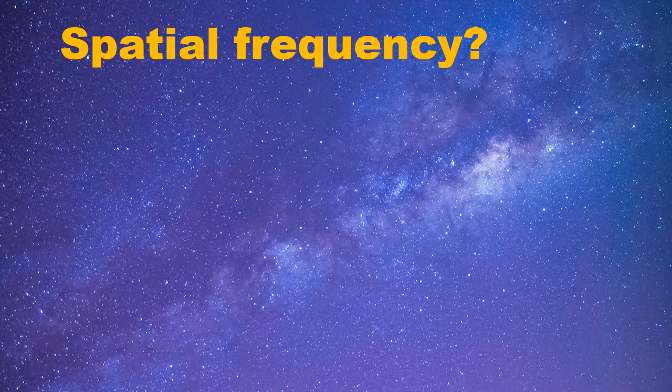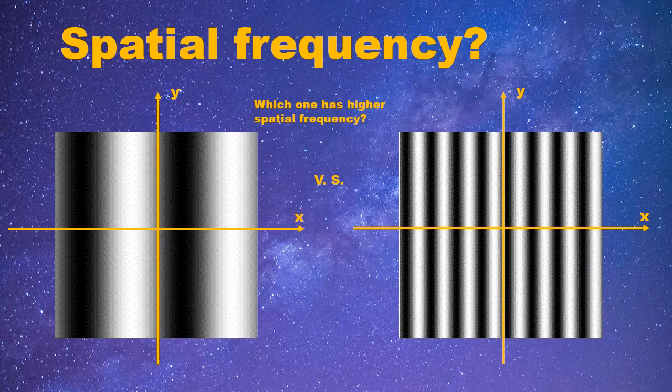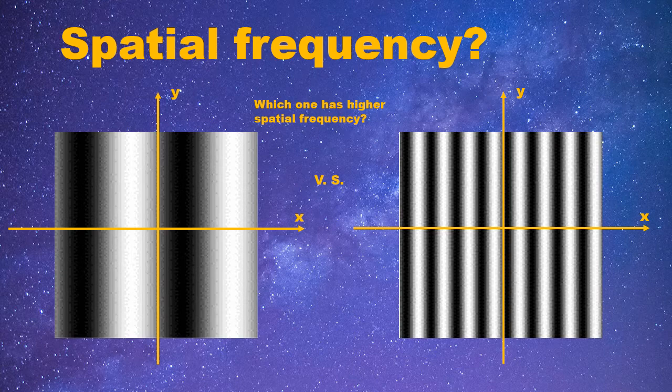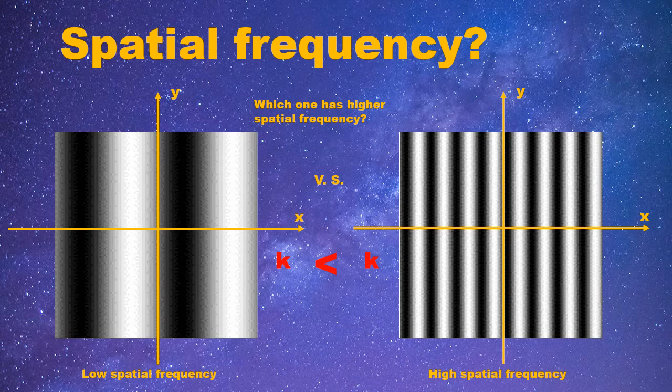If you are confusing about the definition of spatial frequency, don't worry, take a look at this example. Here I am showing you two images. Can you tell me which one has higher spatial frequency? Yes, I believe most people answer this question correctly. The image on the right has a higher spatial frequency than the image on the left, because it changes faster spatially. Therefore, you have understood the definition of spatial frequency. It is a conception describing how fast an image changes spatially.